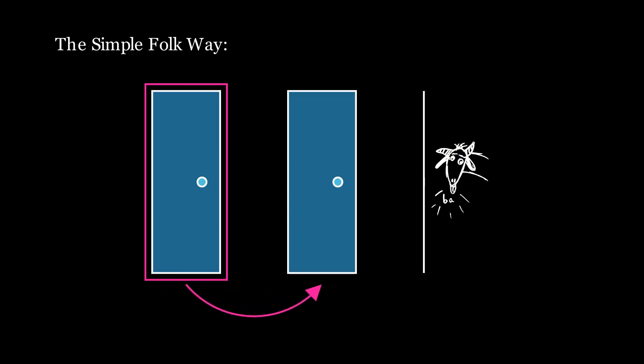You decide there's a one in two chance of getting the car door if you switch so you flip a coin in your head and you decide to switch. Since not switching was just as likely as switching in this scenario there are two outcomes. Getting the car door or the goat door and thus the probability of getting the car door if you switch is indeed one in two.